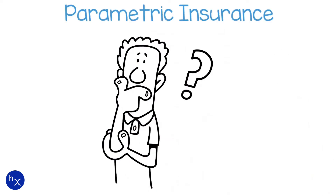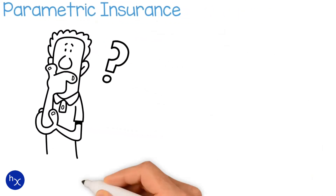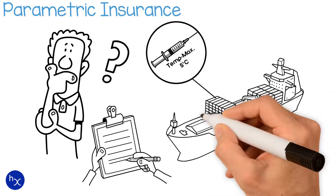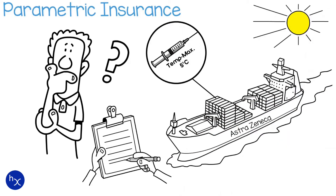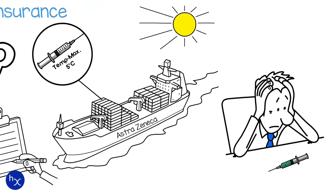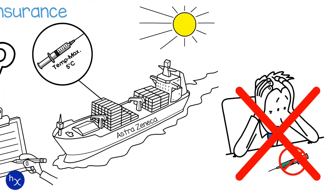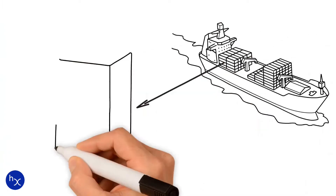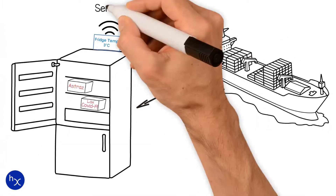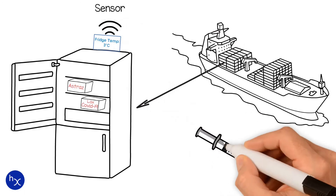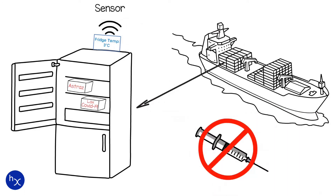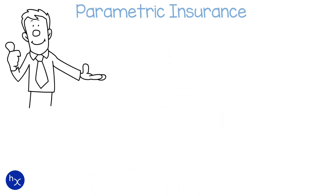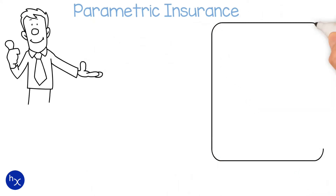How does parametric insurance work? Let's say we are creating a policy to ensure vaccines being transported via ship. As insurers, we want our policy to reflect the amount of risk our client is taking. For vaccines, we want to make sure that they are not exposed to heat during transportation, as this increases the likelihood that they will be unusable on arrival. We can do that with parametric insurance — a policy which responds to real-time sensor data.